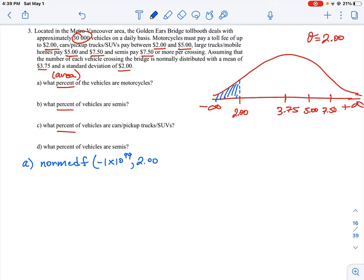That's going to be negative 1 times 10 to the 99 (our lower limit), we're going up to $2.00, and then the last two are our mean and standard deviation. If we plug this into our calculator, you'll need to have this function, and we're going to see that it is 0.1908, or approximately 19.08 percent of all the vehicles.